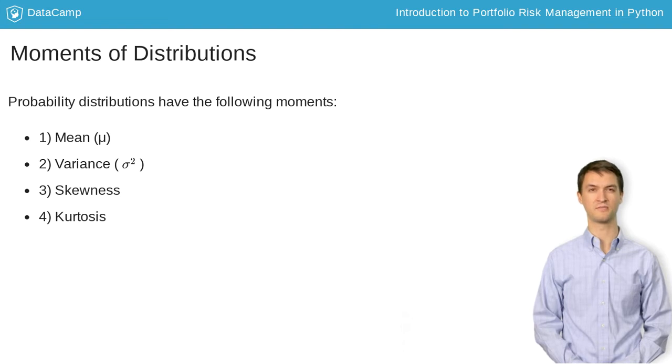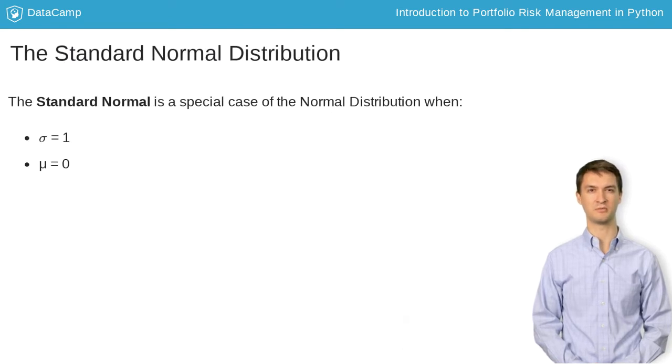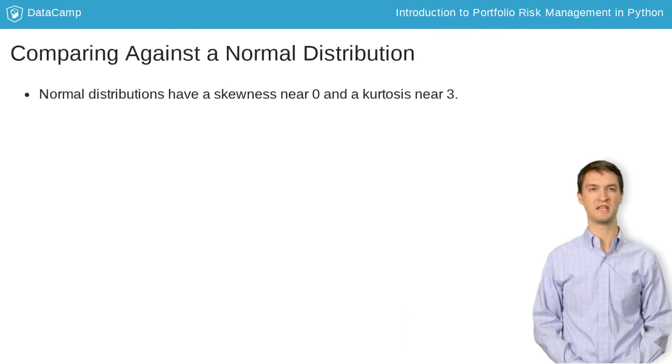We'll get to those later. There are many different types of common distributions. You might be familiar with the Gaussian normal distribution if you've taken a statistics class before. The standard normal distribution is a special case of the normal distribution when sigma equals 1 and mu equals 0. All normal distributions tend to have a skewness near 0 and a kurtosis near 3.